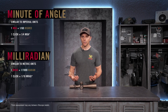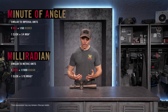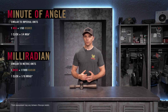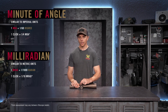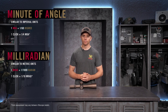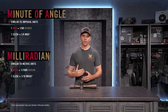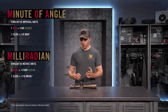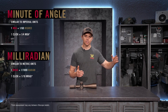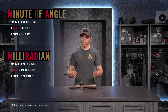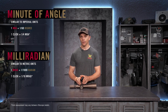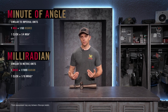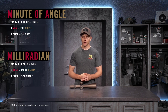Going back to minute of angle: those turrets are typically graduated in quarter-minute adjustments, so every click is about a quarter minute — roughly a quarter inch at 100 yards. When you take that increment out to distance, you're working in fractions. If your shooting partner asks you to dial up ten and a half minutes and you have quarter-minute adjustments, you have to do some math on the front end to figure out how many clicks that is.